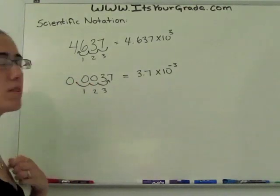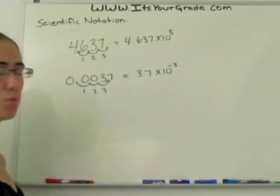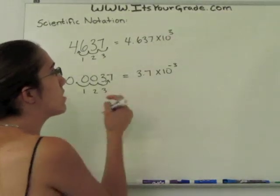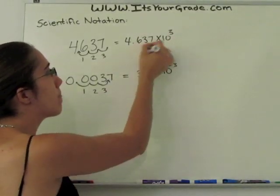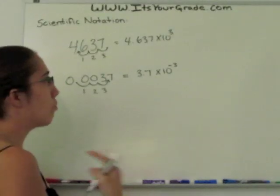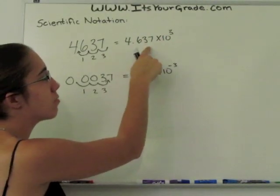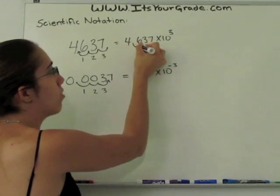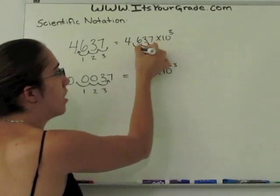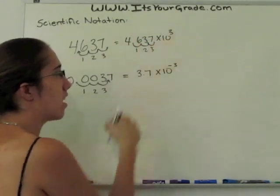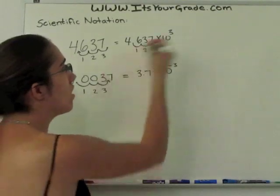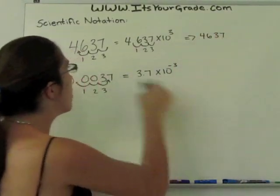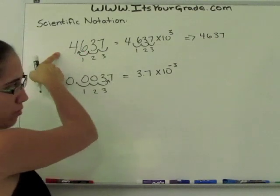What happens if you're given scientific notation and you want to expand it to the normal number? Well, if it's a positive exponent, that means that the number is going to be bigger than 1, so we have to move the decimal to the right. We moved it 3 places because of the exponent, and this will give us the number 4,637, which is the number that we started with.